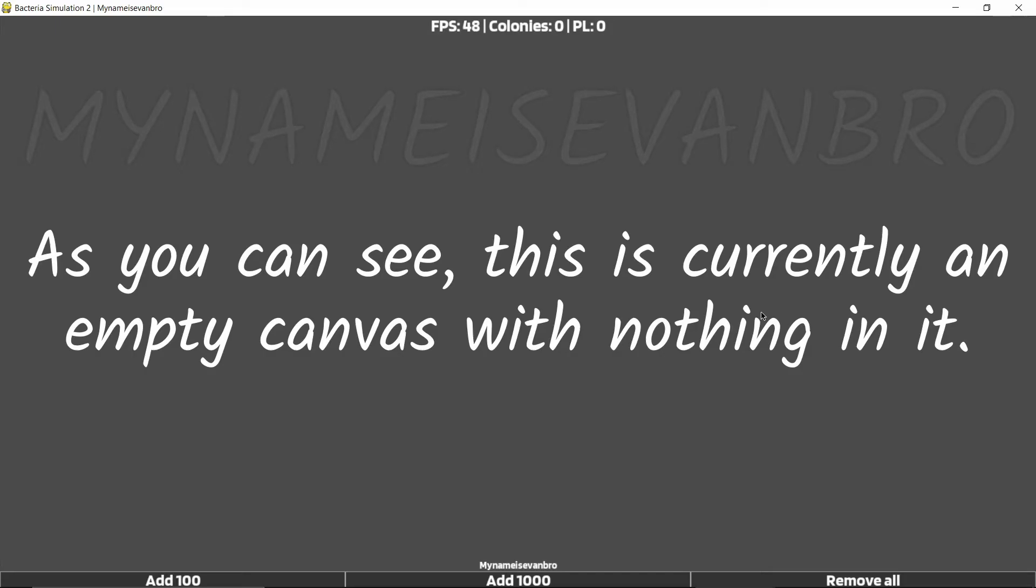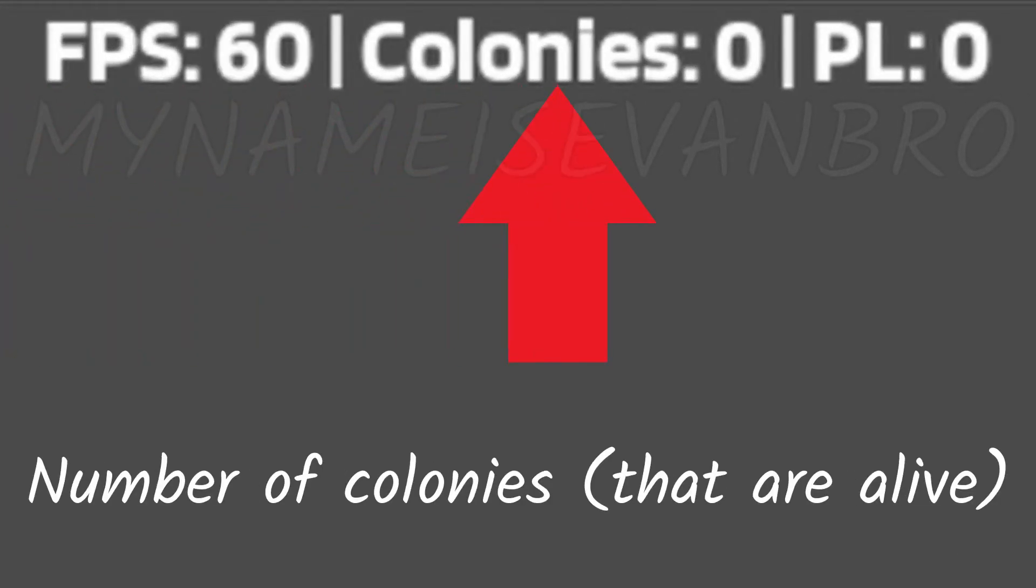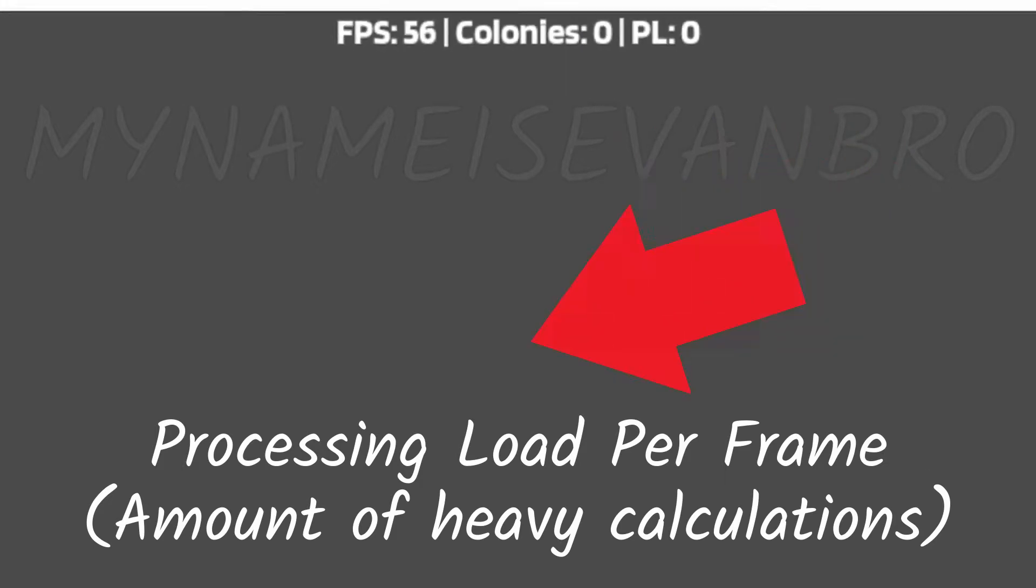As you can see, this is currently an empty canvas with nothing in it. On the top, there is the frame rate, the number of colonies, and the processing load. On the bottom, there are controls.